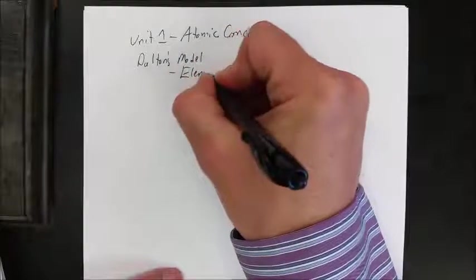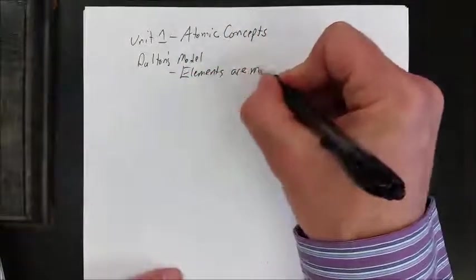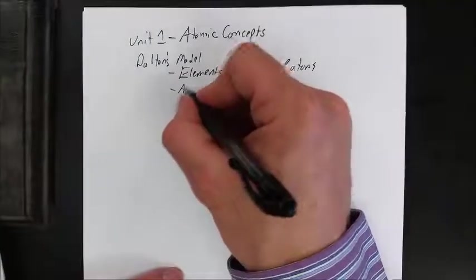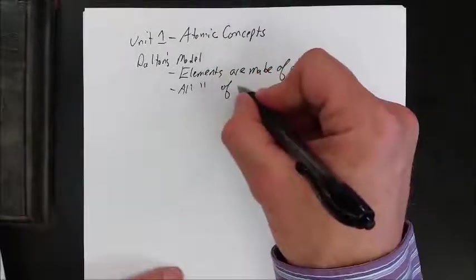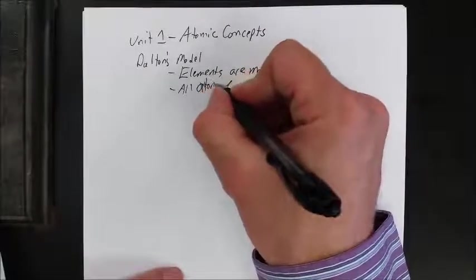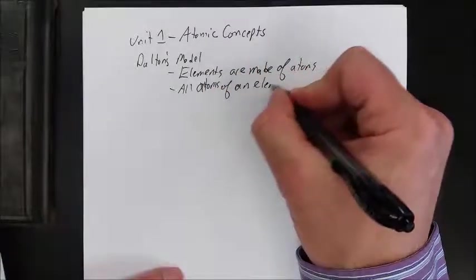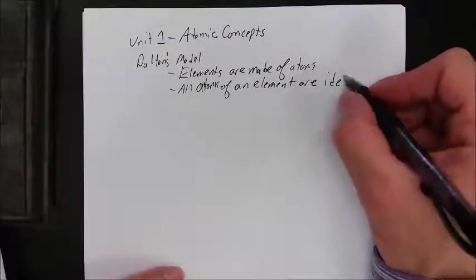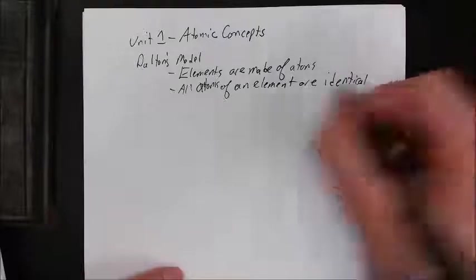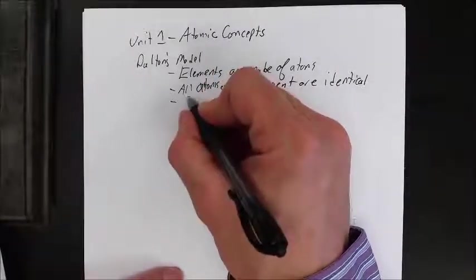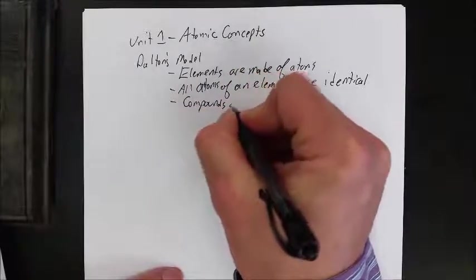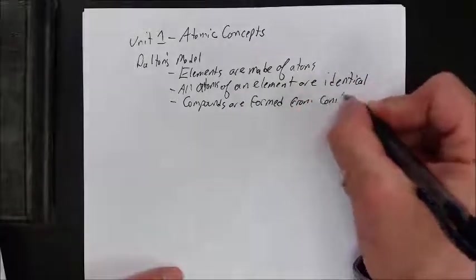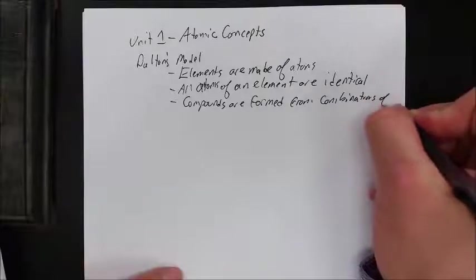He said that elements are made of or from atoms, and he said that all atoms of an element are identical. And we know that's not the case now, but that was Dalton's model. And he hypothesized that compounds are formed from combinations of atoms.